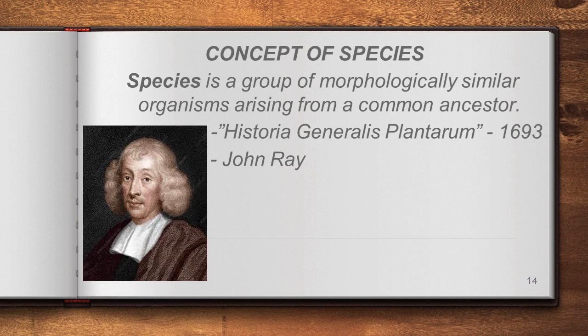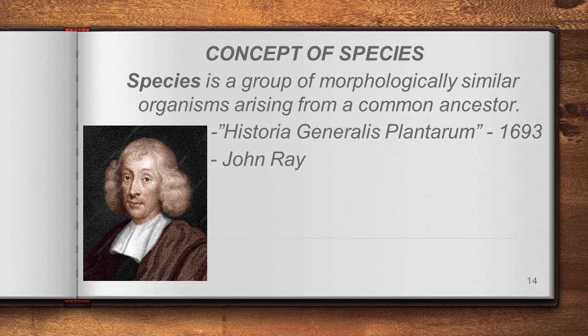The first definition is by John Ray in his book Historia Generalis Plantarum, published in 1693. He defined species as a group of morphologically similar organisms arising from the same common ancestor. For example, all human beings (Homo sapiens) are morphologically similar and share a common ancestry traced back through Homo erectus and Homo habilis.